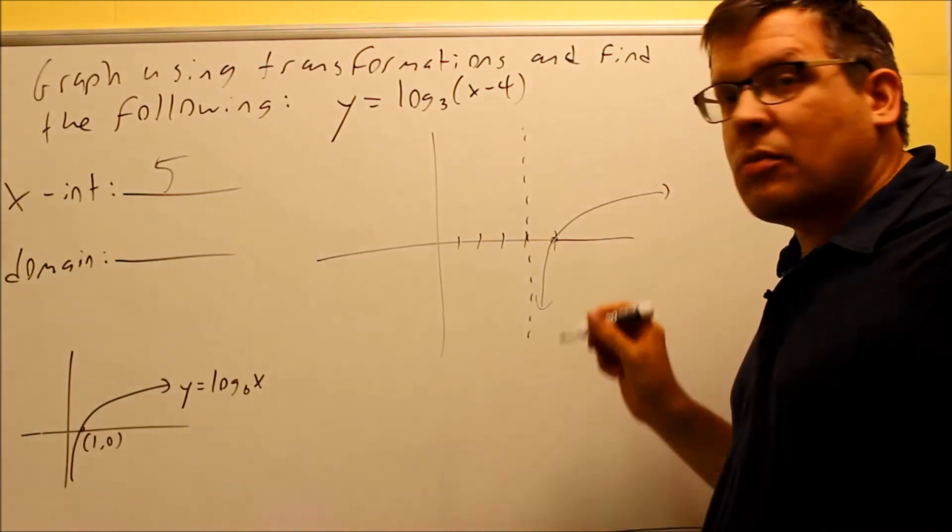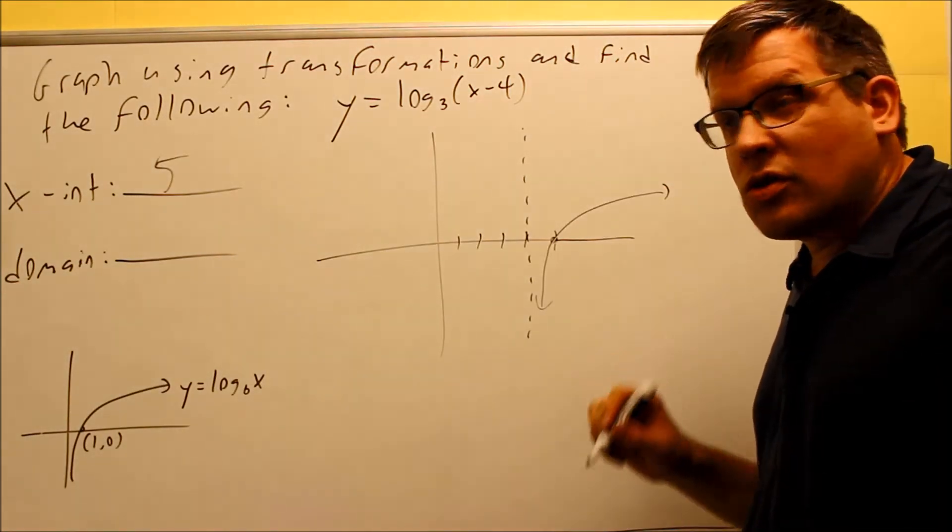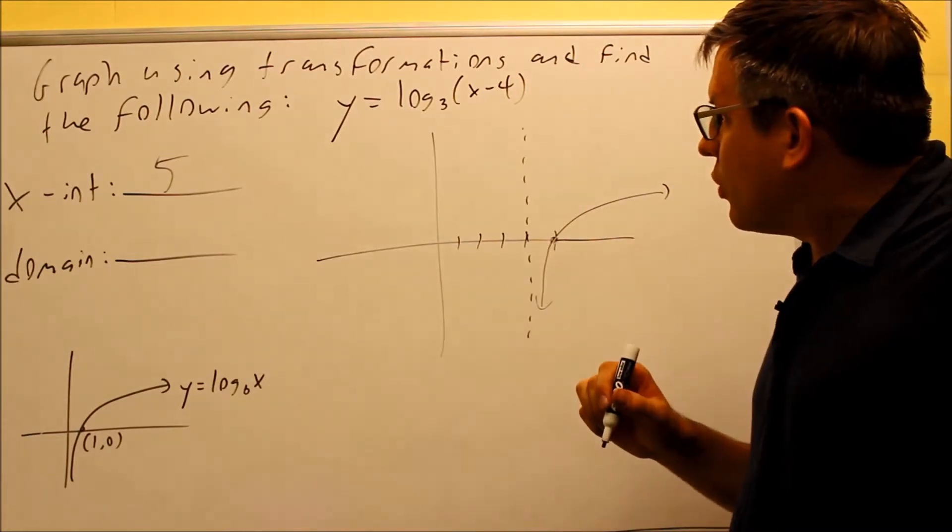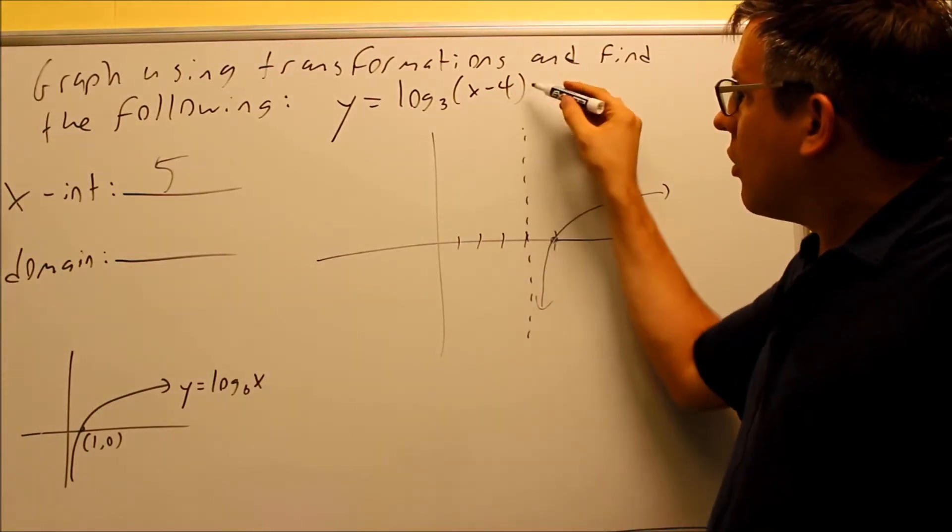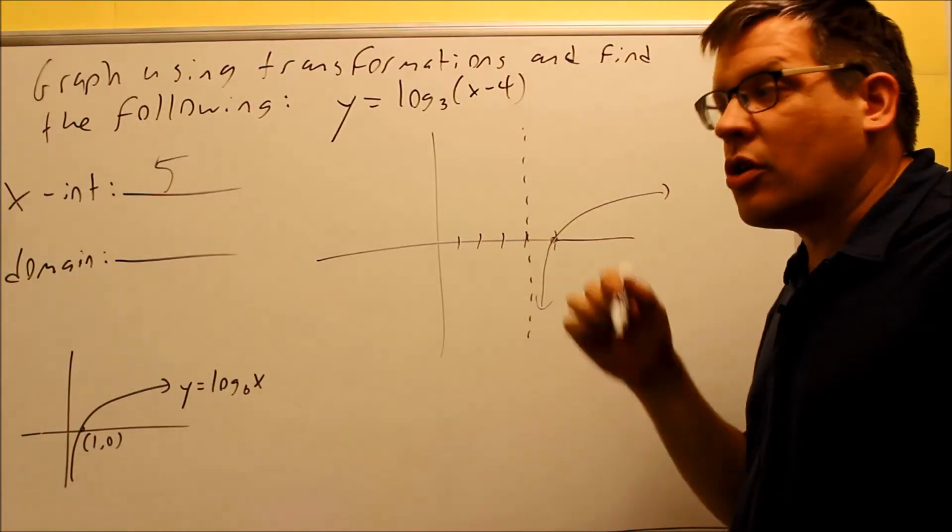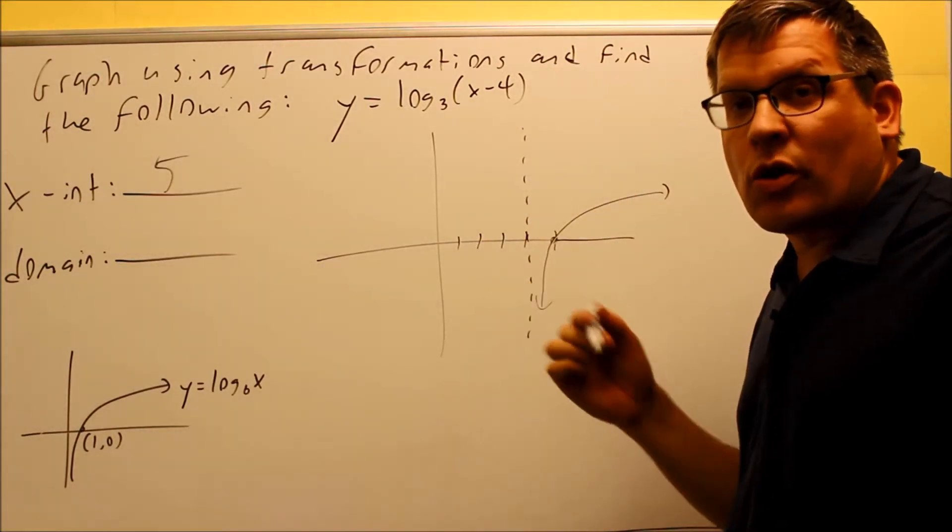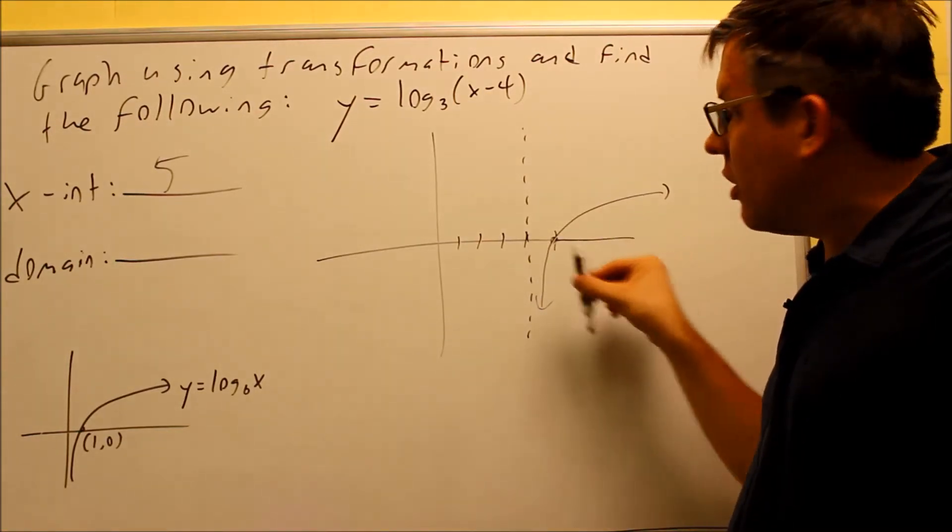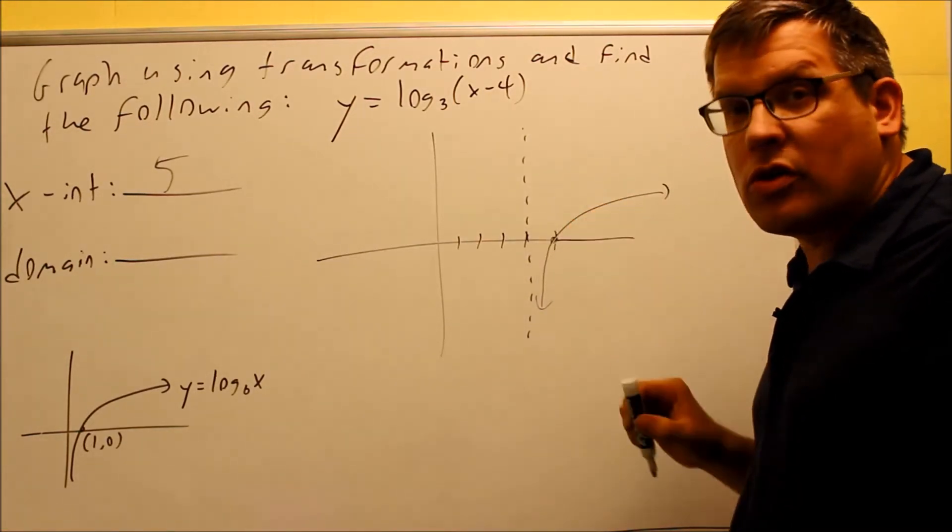Then the domain is talking about the x values that are used in this graph. Now, you could do this one of two different ways. We just did a video talking about that you would take this inside and set it to be greater than zero. So you could do it algebraically. You would get x is greater than four. Or, reading the graph, you see that the only values that are used here will be starting from four and going to infinity.